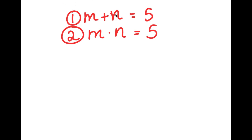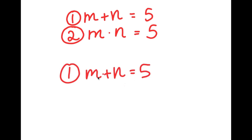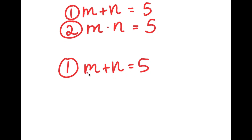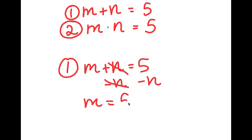My first equation is m plus n equals 5, and what I'm going to do is rewrite this to get the value of just one variable. I'm going to choose m. To get the value of m, I have to get rid of n by subtracting n on both sides, so these two cancel out, and I get m is equal to 5 minus n.